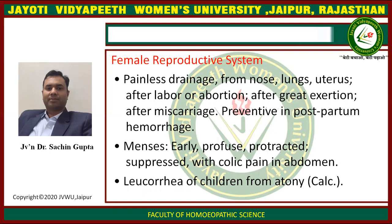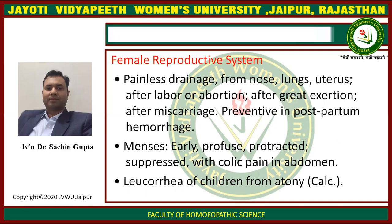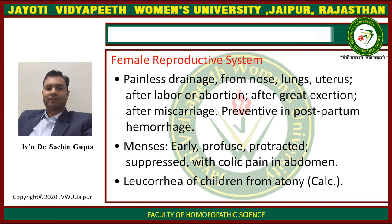Female reproductive system: painless bleeding from nose, lungs, and uterus. After labor or abortion, after great exertion, after miscarriage — preventive of postpartum hemorrhage. Menses: early, profuse, protracted, or suppressed, with colic pain in abdomen. Leukorrhea of children from atony, like Calcarea carb.